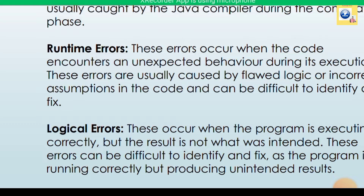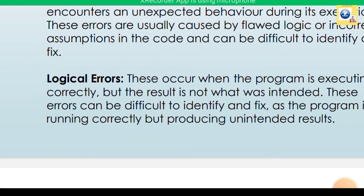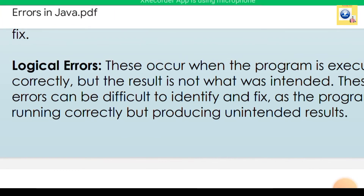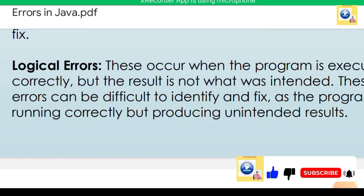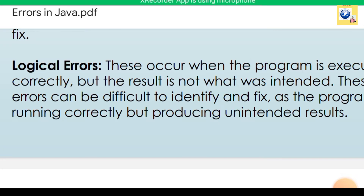We will discuss the different types of runtime errors as well. Now let's look at logical errors. This third type of error is always hidden in the program — it can't be detected by the compiler, and even though output is displayed, it is not proper. These errors occur when the program executes correctly but the result is not what was intended.